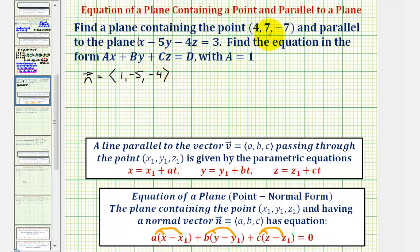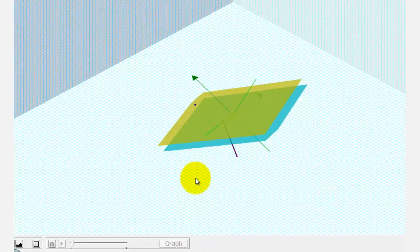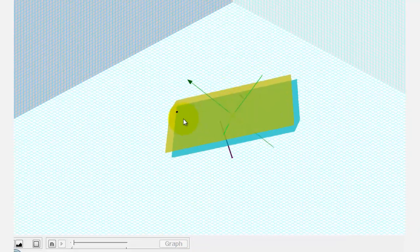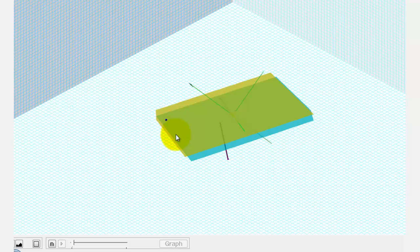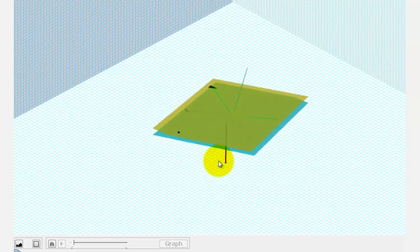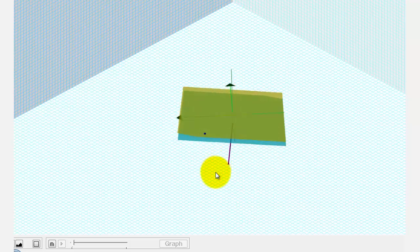But before we do this, let's look at this graphically. We're trying to find the equation of this yellow plane that contains this blue point, and we're given the equation of this blue plane, or this light green plane below.